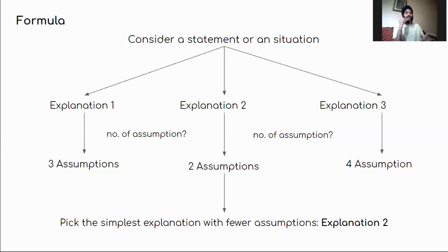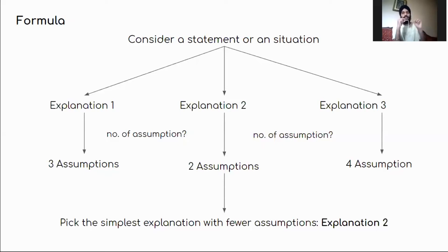So what's the formula of Occam's Razor Principle? It's pretty simple. You have to consider the particular situation or statement. Then you have to find all the possible explanations for that situation, by asking 'what could have happened' to generate different explanations. For each explanation, you then find the number of assumptions it has.